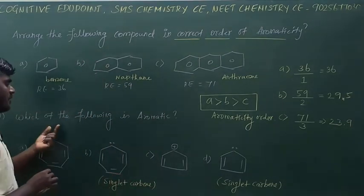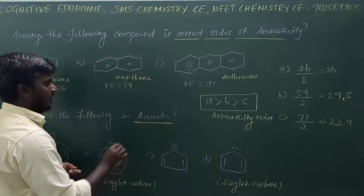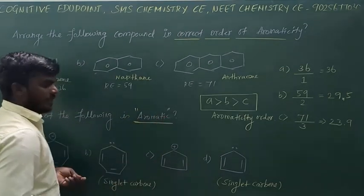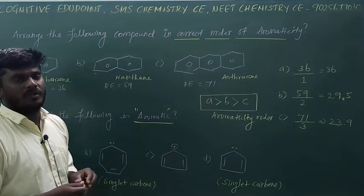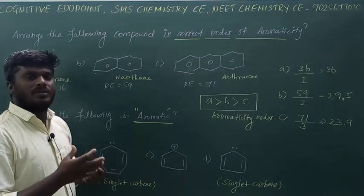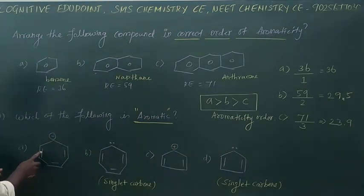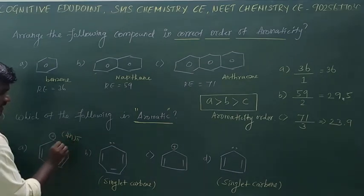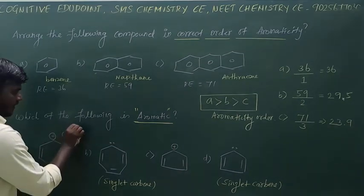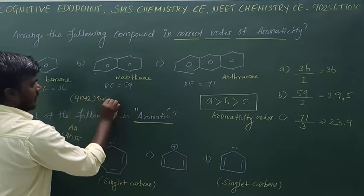Next question: which of the following is aromatic? Aromaticity requires a 4n+2 pi electron system — that is, a cyclic, planar, conjugated system. A 4n pi electron system is anti-aromatic. The option with a 4n+5 electron system is anti-aromatic.